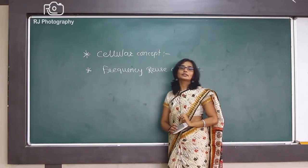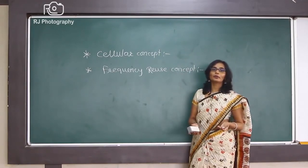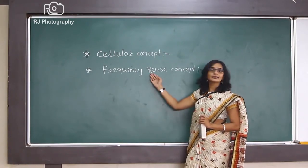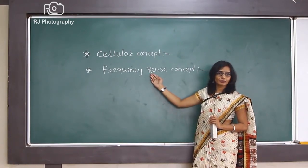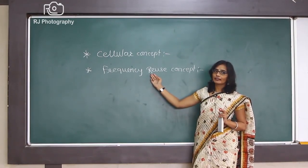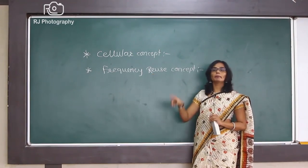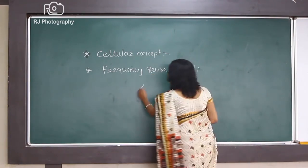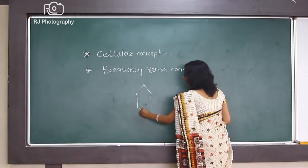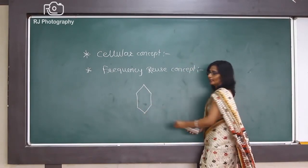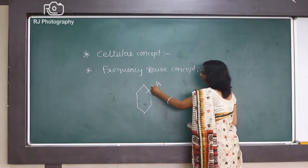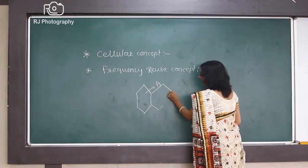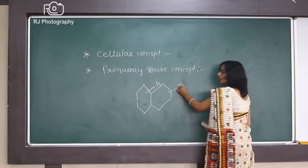In this frequency reuse concept, we are going to continuously reuse the frequency, but there are some limitations. The condition is that two neighboring cells should not have the same frequency. I will show you by the diagram. Suppose the cell shown by the hexagon is cell number A, and a neighboring cell of the same hexagonal shape is cell B.